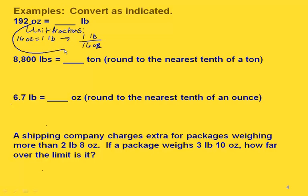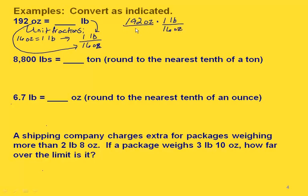The ounces that we started with go on the bottom, and the pounds that we're converting to go on the top. Now we have 192 ounces times one pound over 16 ounces. We're going to write our original units over one so that we can do the multiplication with the fractions. Here's why it's so important to write the units in — we can see we picked the right unit fraction because these two units cancel, and the one we're left with is pounds, which is what we want.